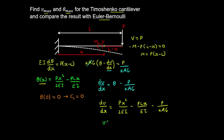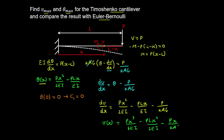Integrating this equation gives an expression for the deflection: px³ / 6EI minus PLx² / 2EI minus Px / (κAG), plus a constant of integration. Applying the boundary condition that the deflection at x equals 0 is zero at the support gives c₂ equals zero.